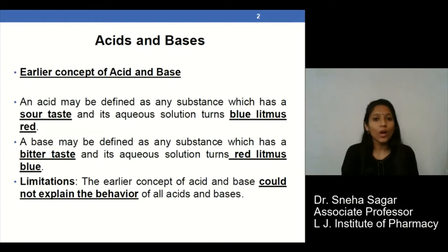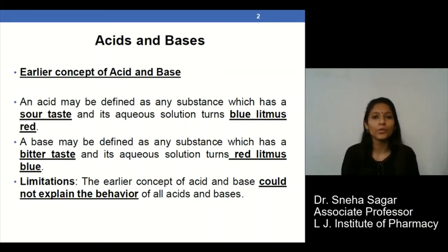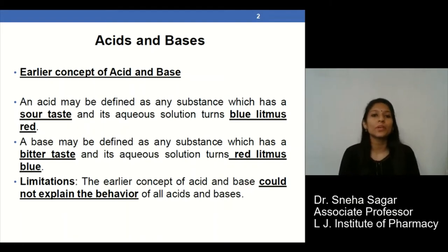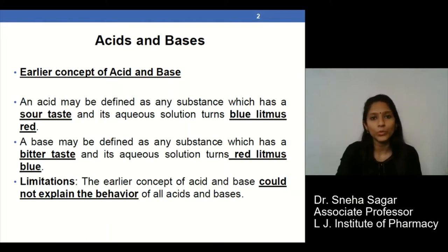We will start with the different theories of acids and bases. The earlier concepts indicate that any compound or chemical which has a sour taste and turns blue litmus into red is known as an acid. Whereas a base is defined as any substance which has a bitter taste and turns red litmus into blue.